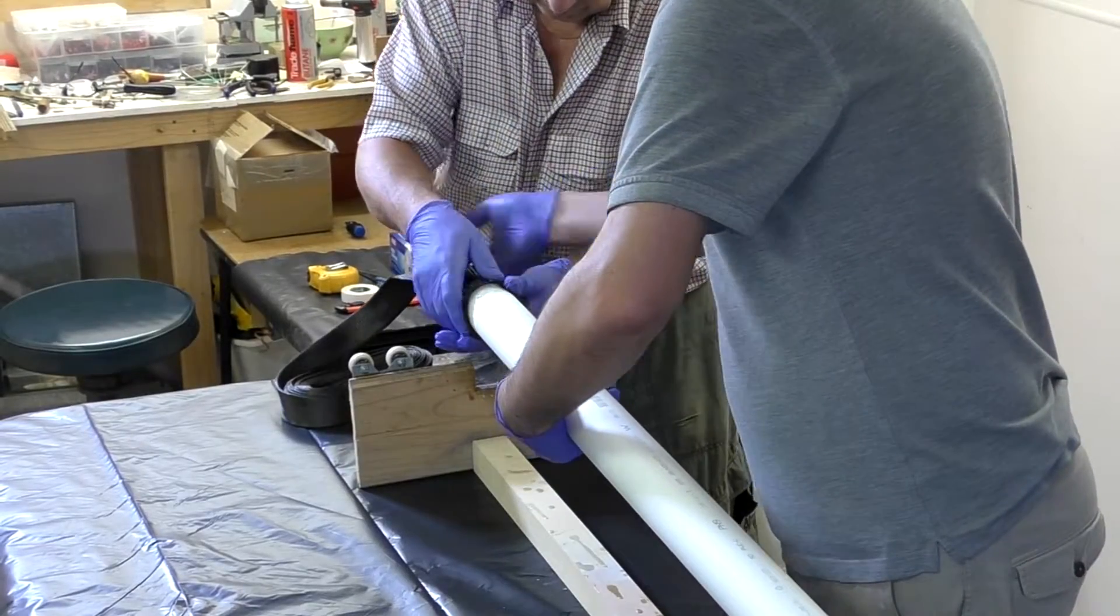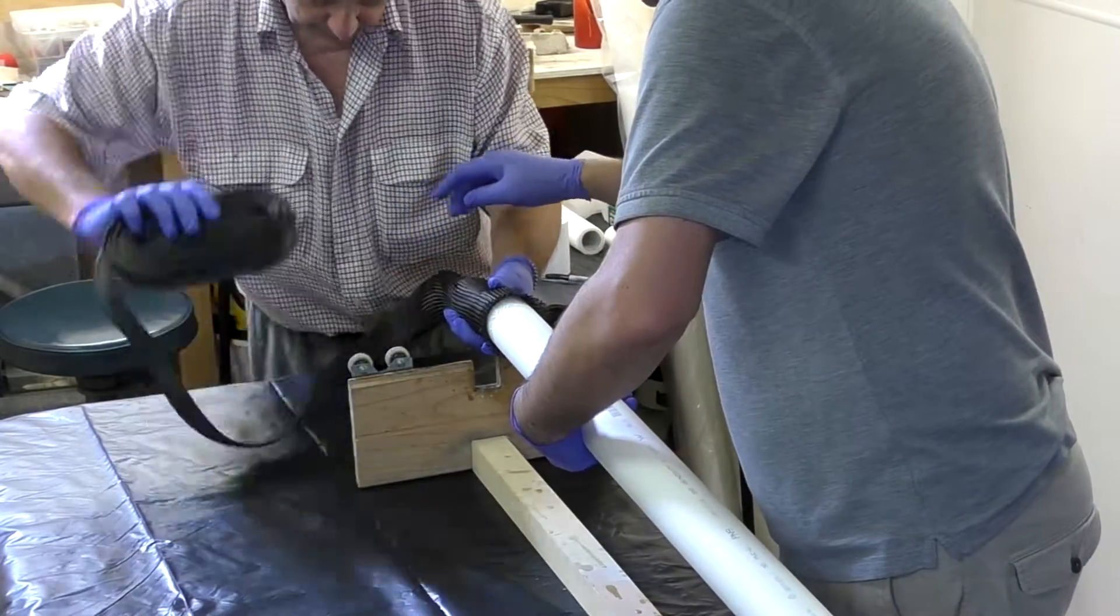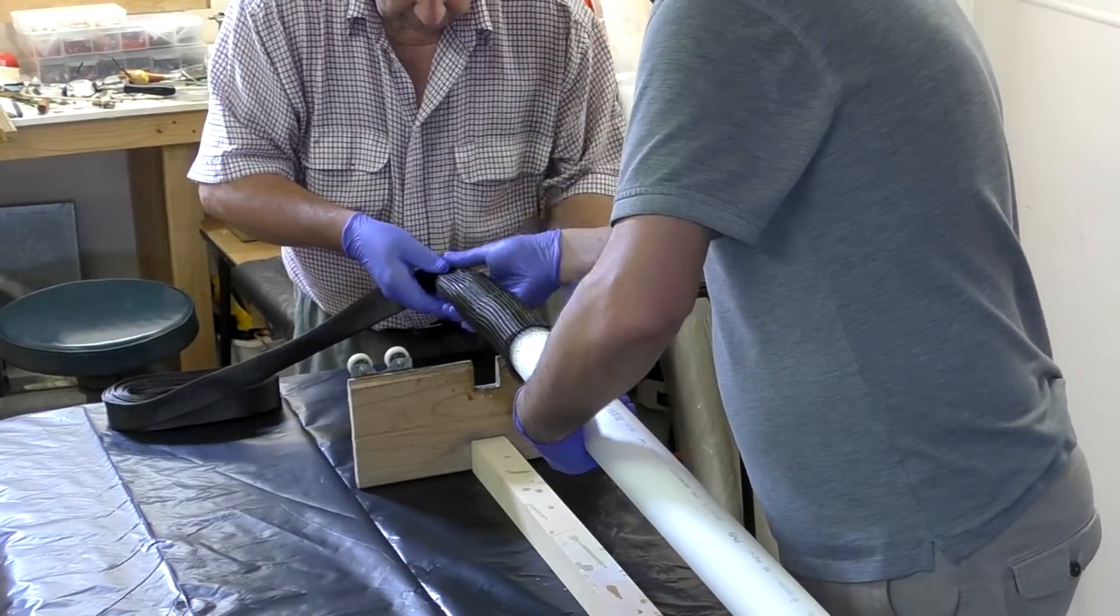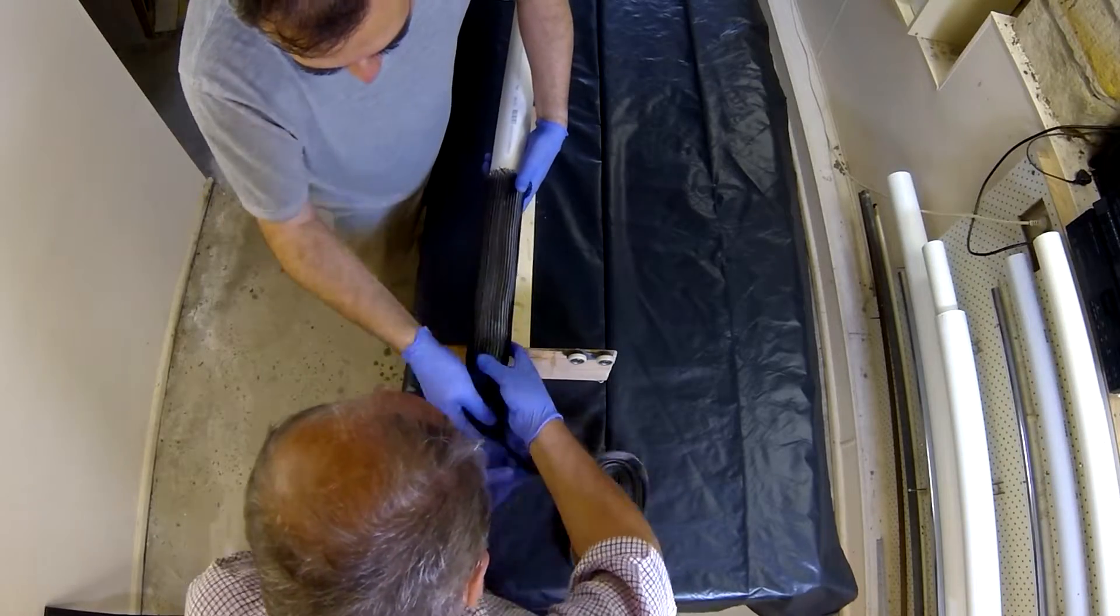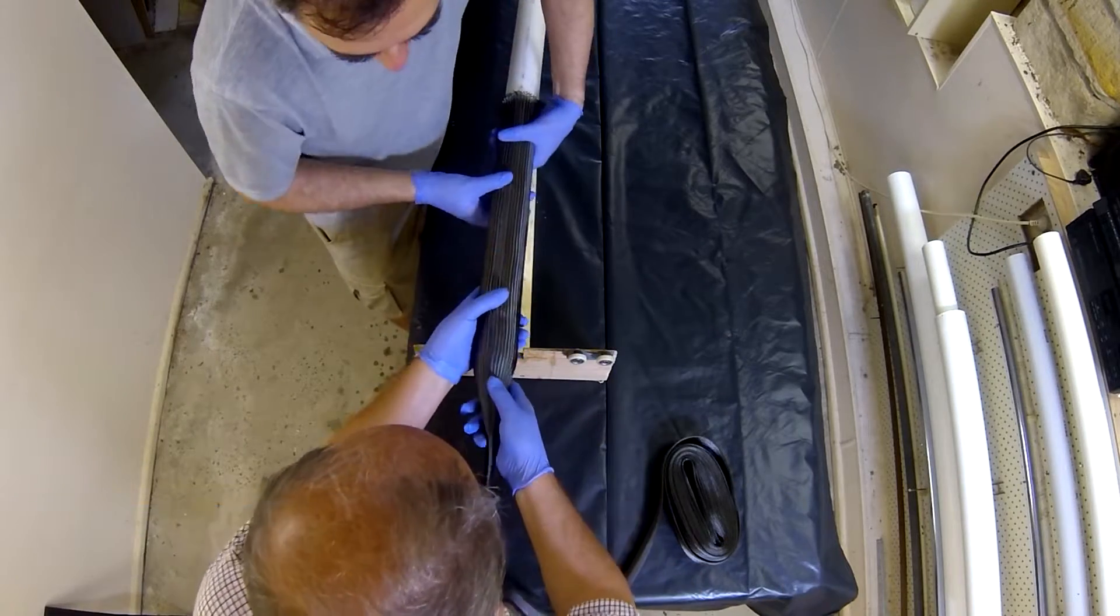The 2-inch carbon fiber sleeve is next. We slide it on dry because it would be too difficult to put it on wet. Now we buy our sleeves from Solar Composites in the United States. The link is in the description below.